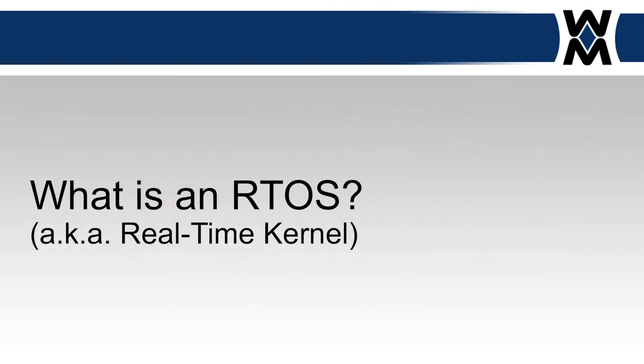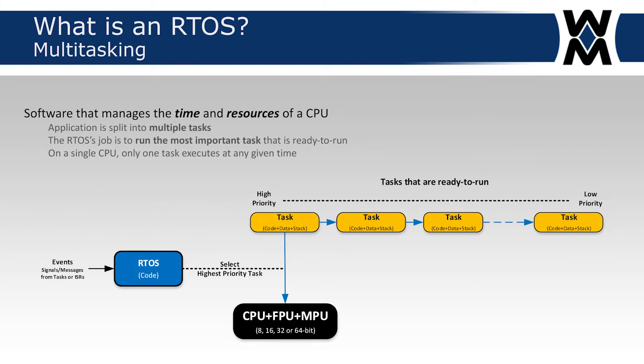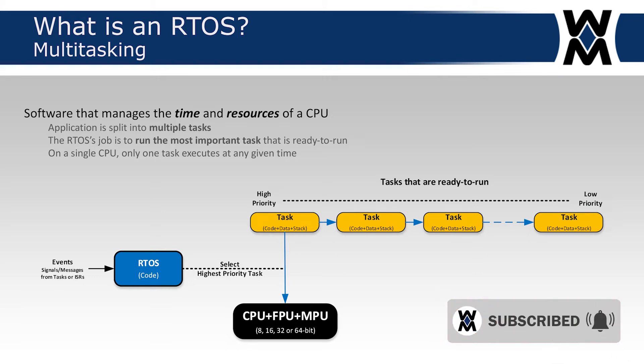Let's get into what is an RTOS. The simplest definition I have for an RTOS is software that manages the time and resources of a CPU. The application is split into multiple tasks, each task responsible for one aspect of your embedded system. The RTOS's job is to run the most important task that's ready to run. Here I show a list of tasks ordered by priority — the CPU can only execute one task at a time, executing the highest priority task that is eligible or ready to run. The RTOS switches between tasks when the high-priority task is no longer able to run because it's waiting for an event to occur.